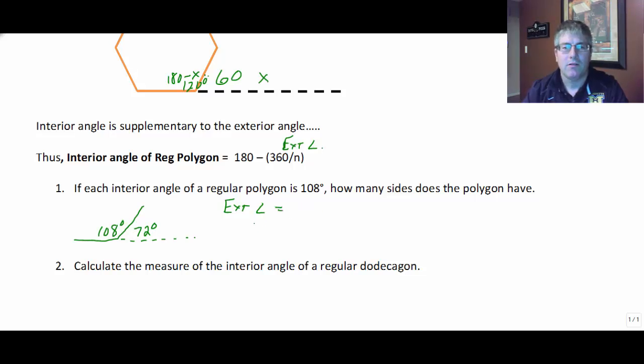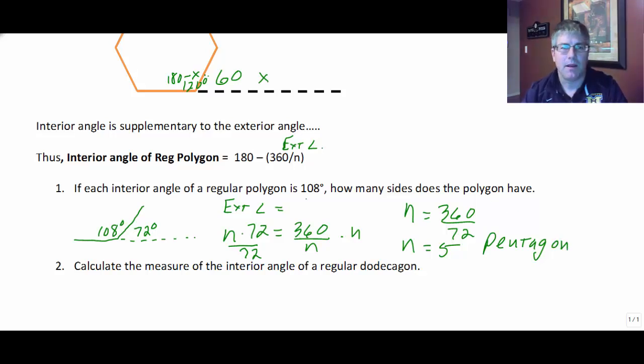And using my exterior angle formula, the exterior angle of 72 will equal 360 divided by n. So multiply both sides by n divided by 72, and we get n is equal to 360 divided by 72, and n equals 5. So this polygon must be a pentagon. In fact, it's not just a pentagon. It is a regular pentagon. Because I said it's a regular polygon. It's not just any old pentagon.